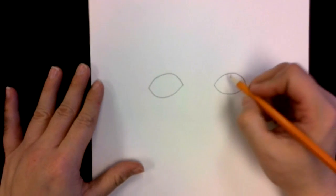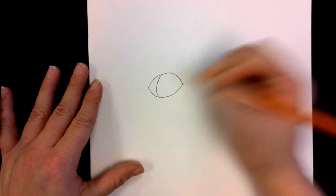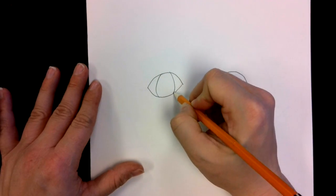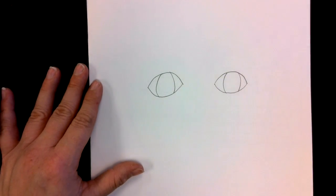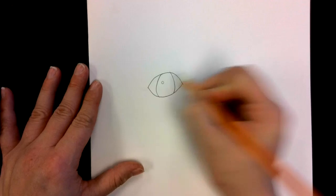I'm going to do two curved lines to the left and two to the right for the inside of my eye, and I'm going to draw little circles for the reflections inside my eyeball.